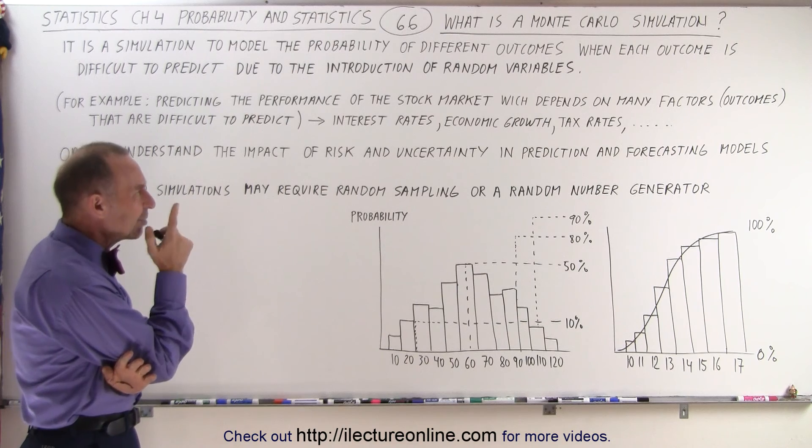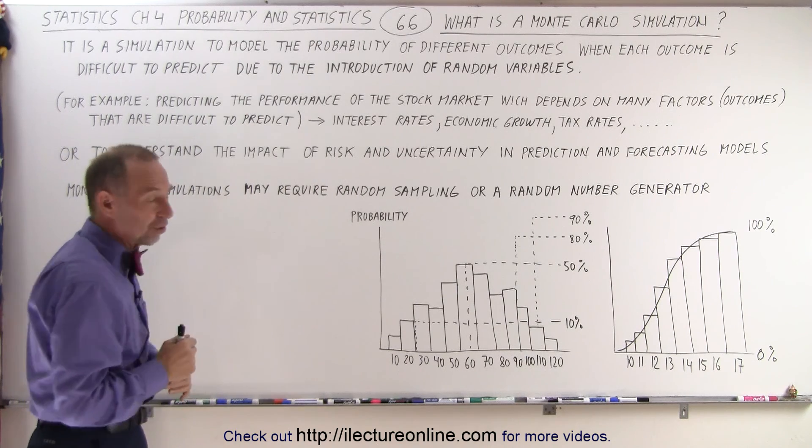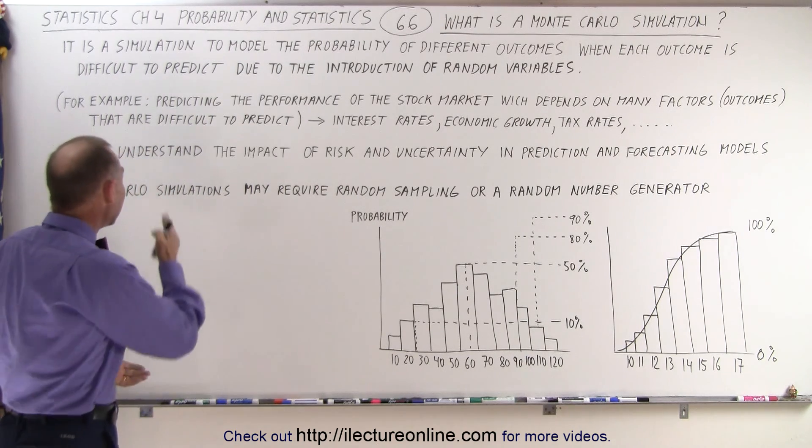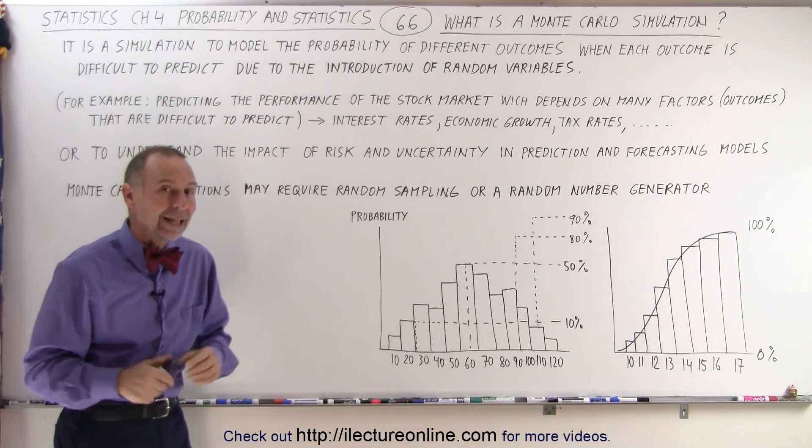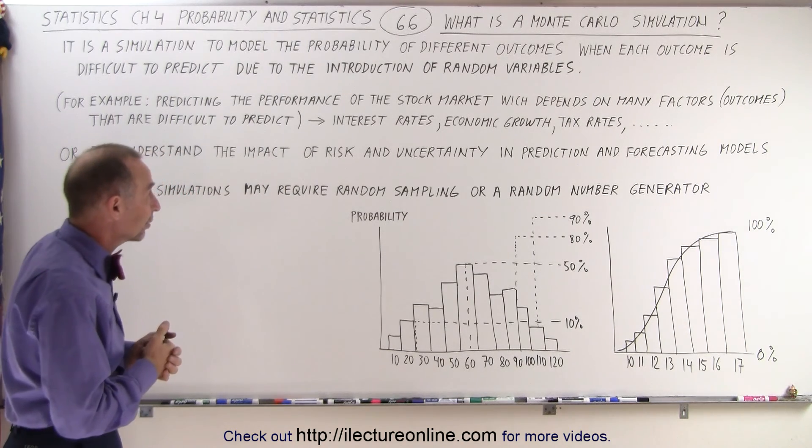Now, we know that the stock market depends on many factors, we call them outcomes, and they're all difficult to predict and that's what makes it so difficult to figure out what the stock market does.